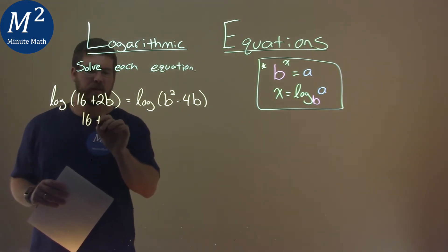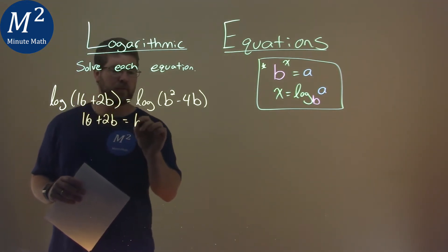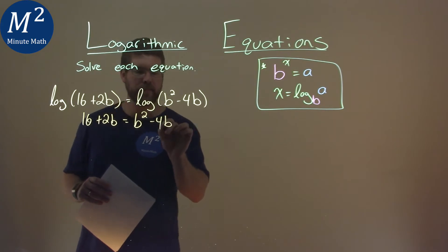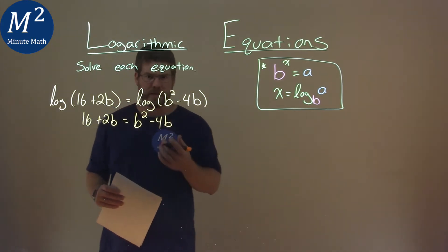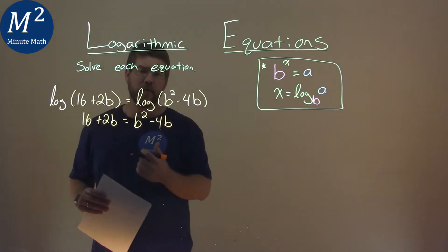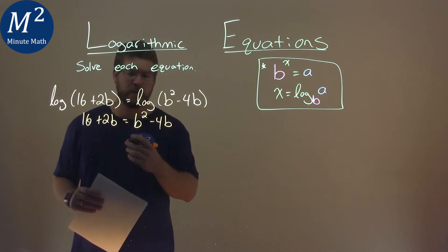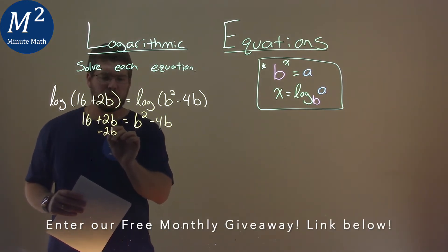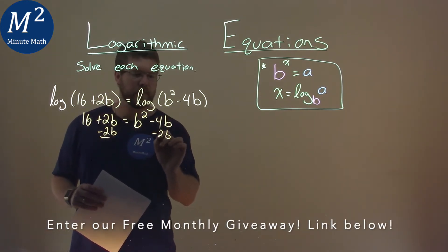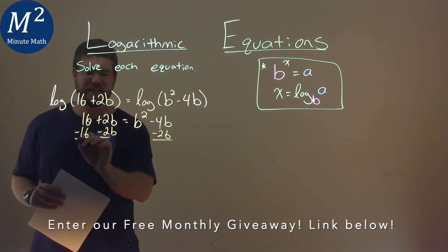So we've got 16 plus 2b here equals b squared minus 4b. Now let's combine the like terms, and let's bring everything to the right-hand side and solve for b. I subtract 2b to both sides here, and I'm going to subtract 16 as well.